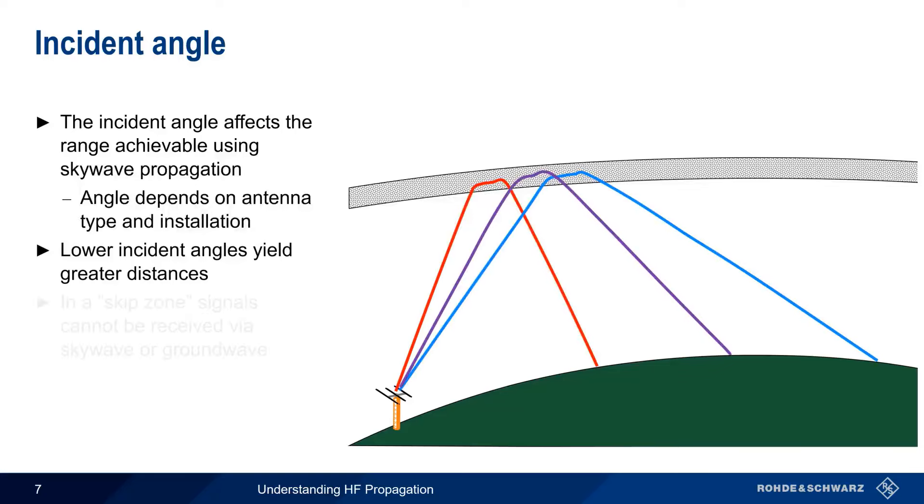Note, however, that so-called skip zones may be created depending on radiation or incident angle. In these zones, HF signals can't be received either via SkyWave or via GroundWave propagation.